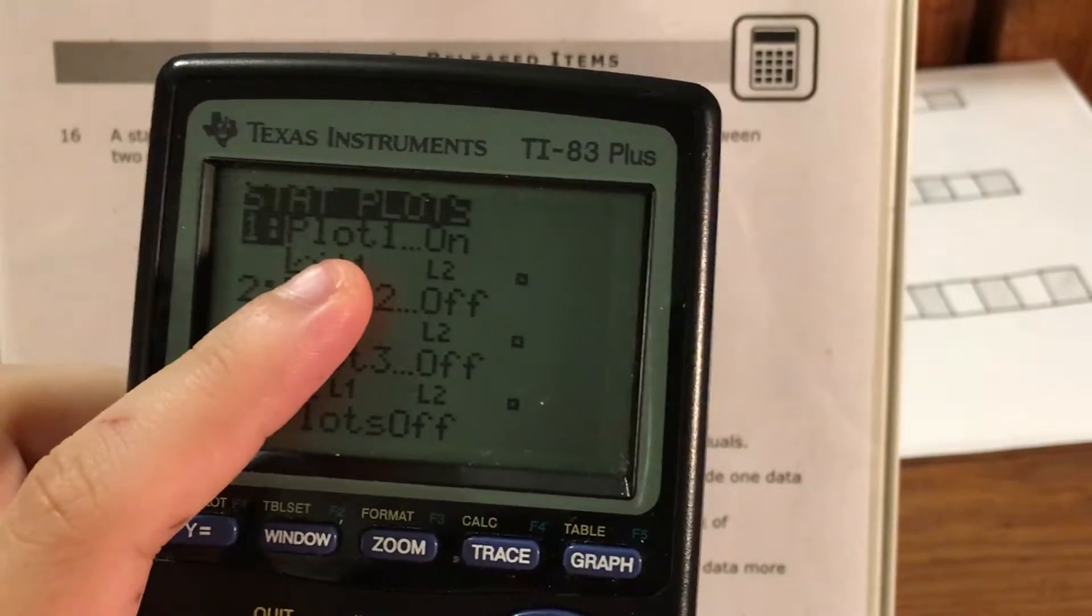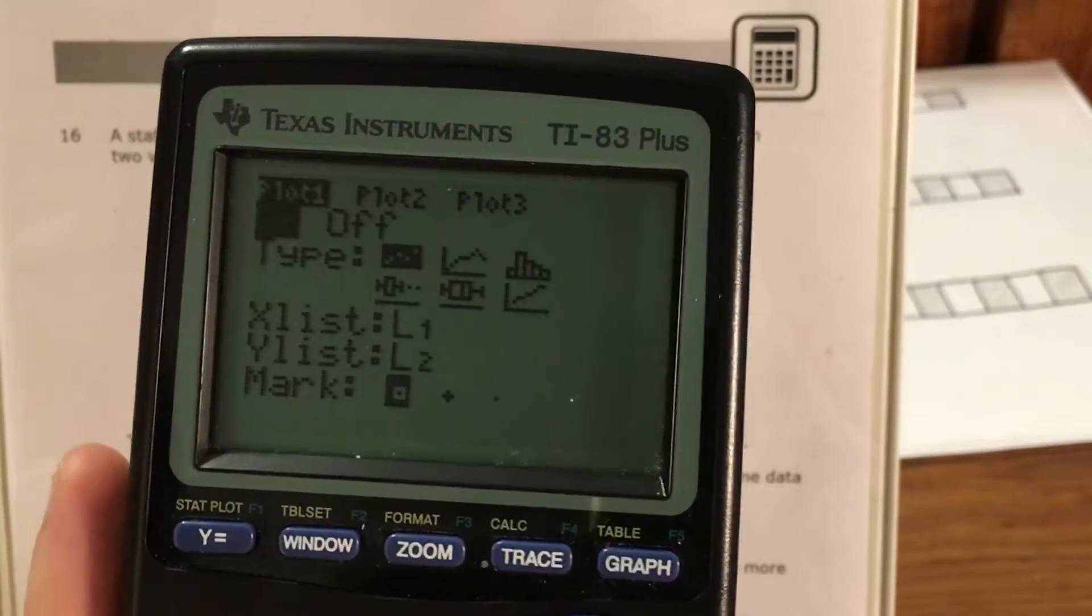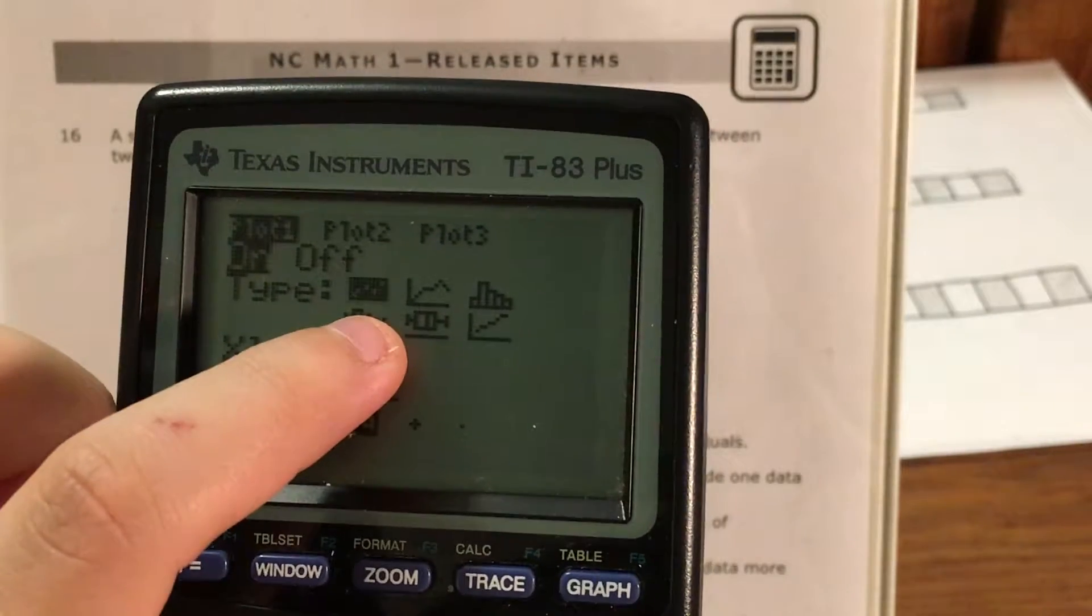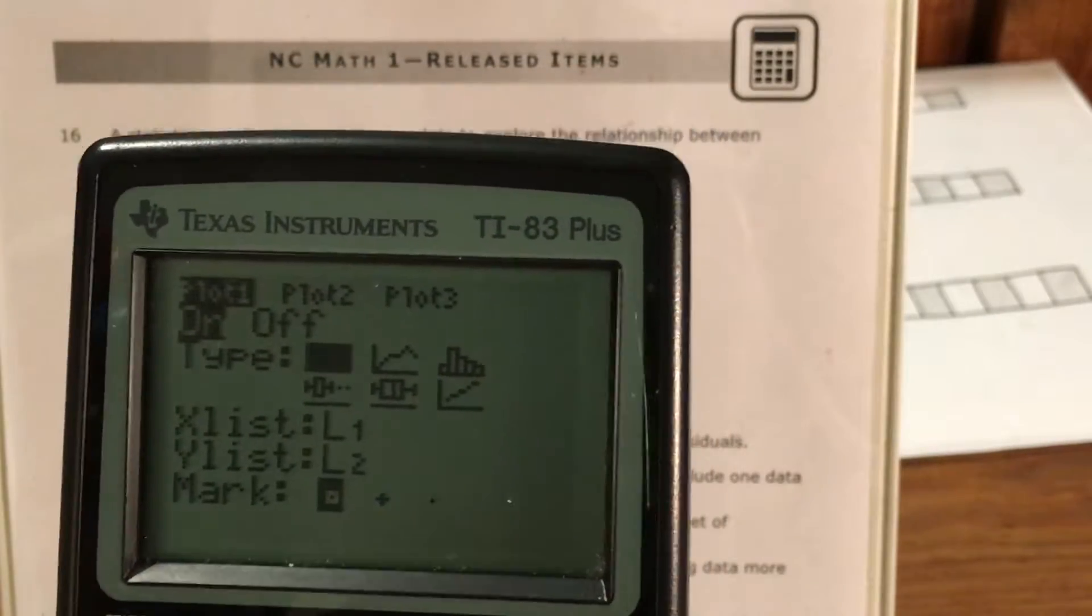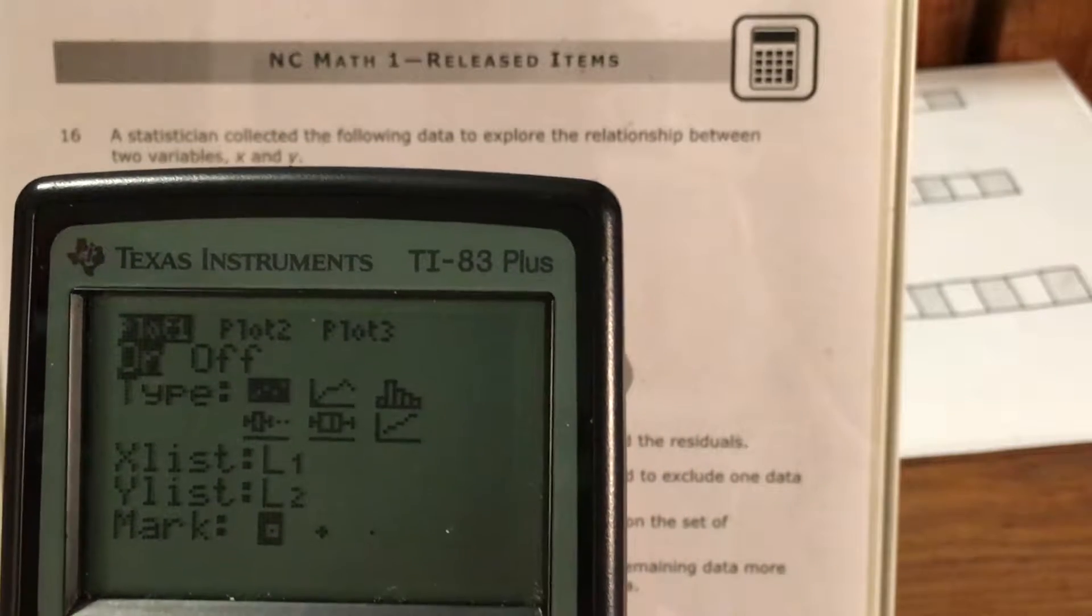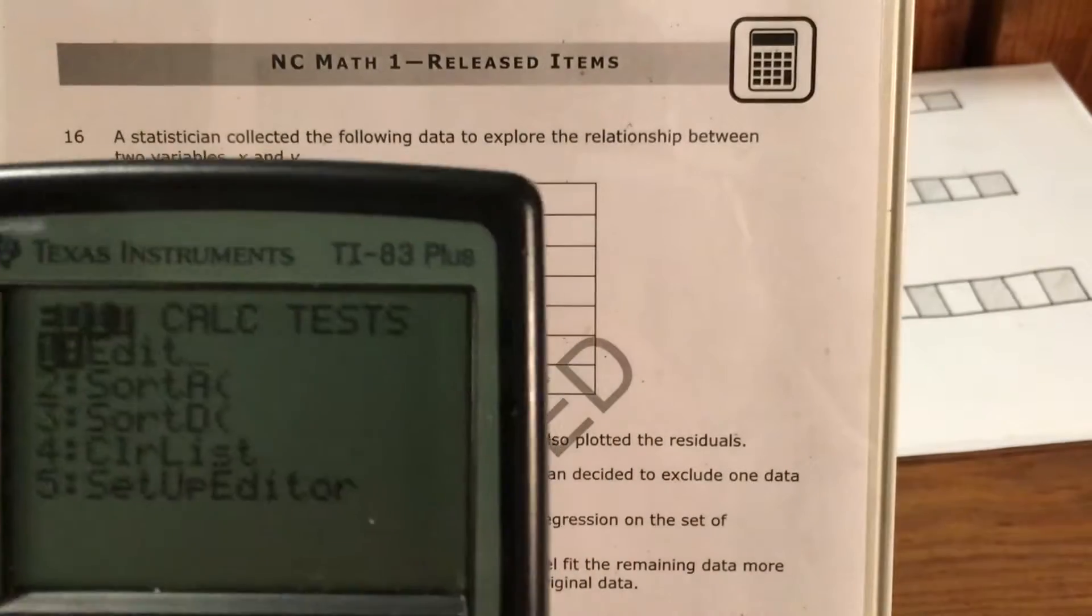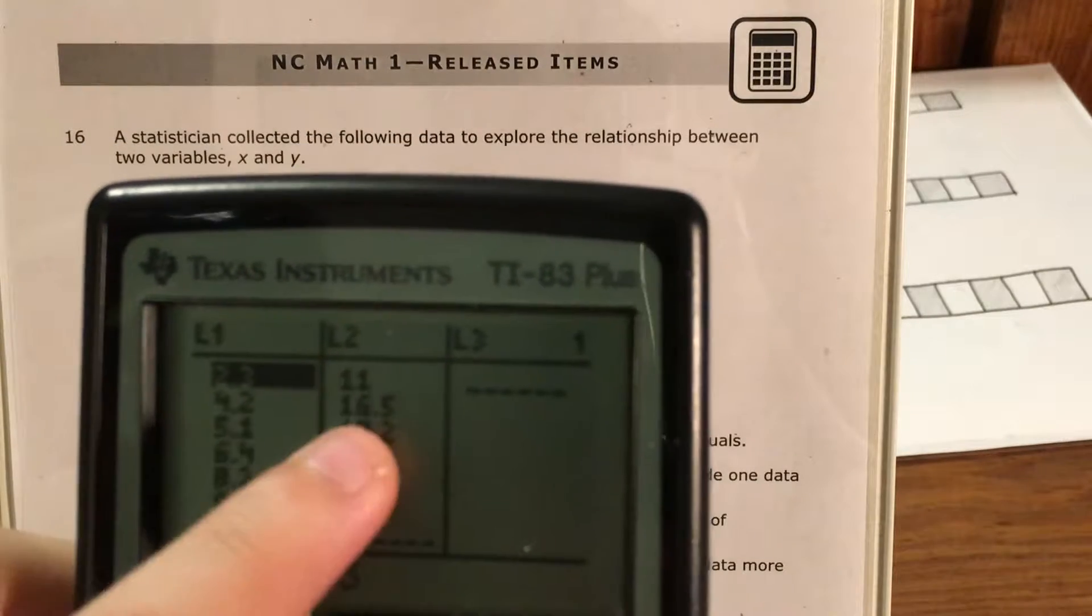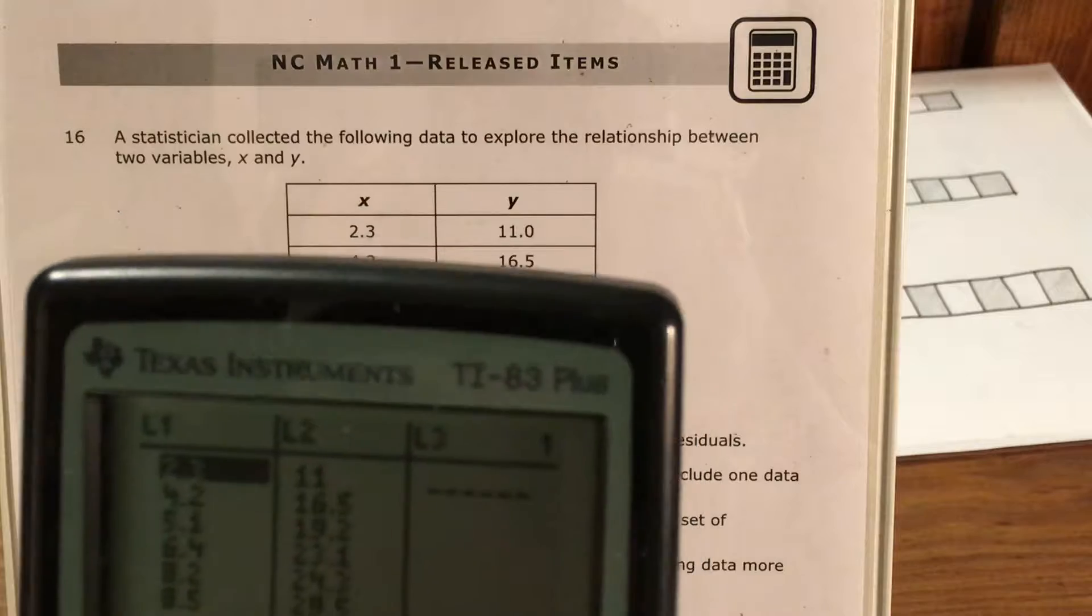And now I want to turn plot one on, first off it needs to be on and when I go to type it should be this thing with all the dots. Now that essentially means that it's going to graph the points that I give it from this menu where each row it's going to read as an x value and a y value.